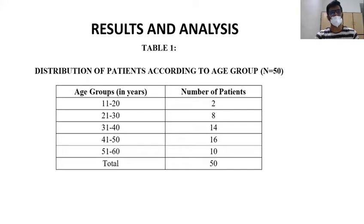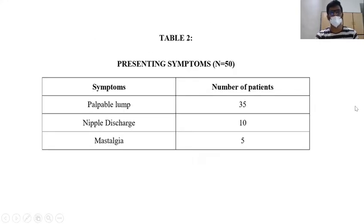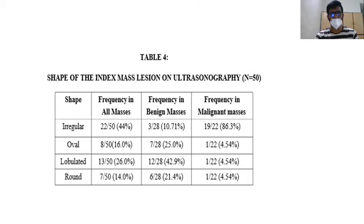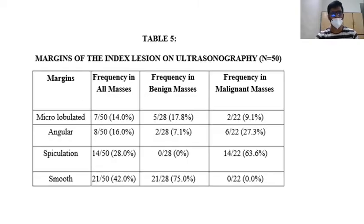Coming to results analysis, the tables show distribution of patients according to age group, presenting symptoms, ultrasonographic findings, and frequency of the shape of index mass lesions on ultrasonography.